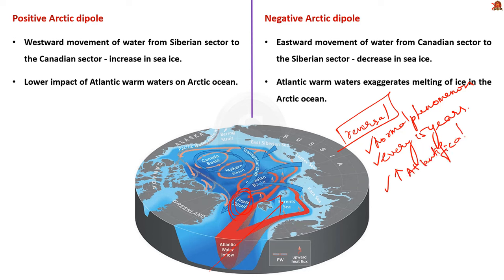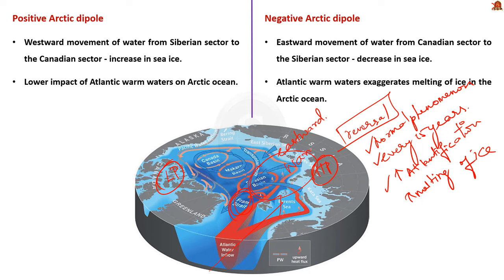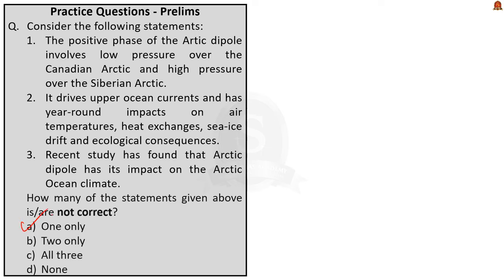If the Arctic Dipole gets reversed to negative, it increases the Atlantification effect, meaning warm saltier water from the Atlantic Ocean will exaggerate the melting of Arctic ice. During a negative dipole, low pressure is over the Canadian sector and high pressure over the Siberian sector, so ocean currents move eastward. Since warm water already exists in the Siberian sector, this eastward movement intensifies temperatures and affects ice formation. The correct answer for this question is Option A — one only, as the first statement is the only incorrect one.